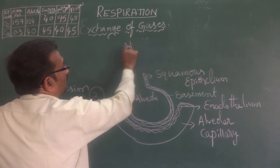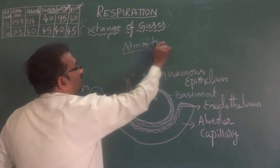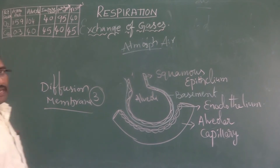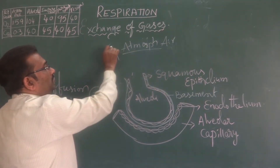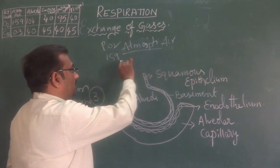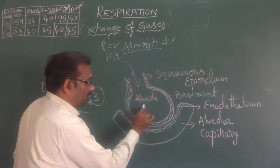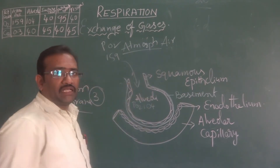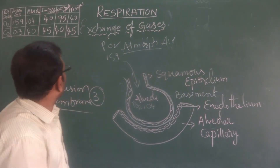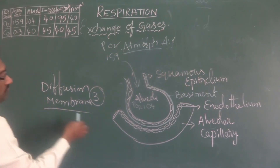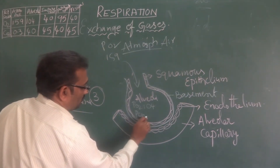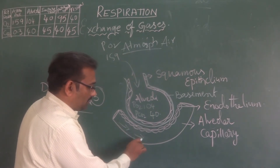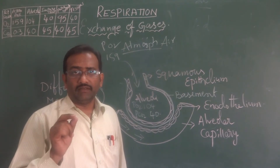As per the table, oxygen is 159 units in the atmosphere. These 159 units of oxygen enter into the alveoli and convert to a partial pressure of 104. So the partial pressure of oxygen in the alveoli, PO2, is 104, and PCO2 is 40.